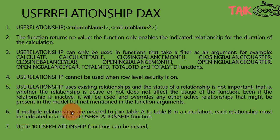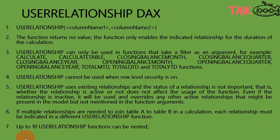If multiple relationships are needed to join table A to B in a calculation, each relationship must be indicated in a different USERELATIONSHIP function. Up to 10 USERELATIONSHIP functions can be nested. Now let's go into the practical.